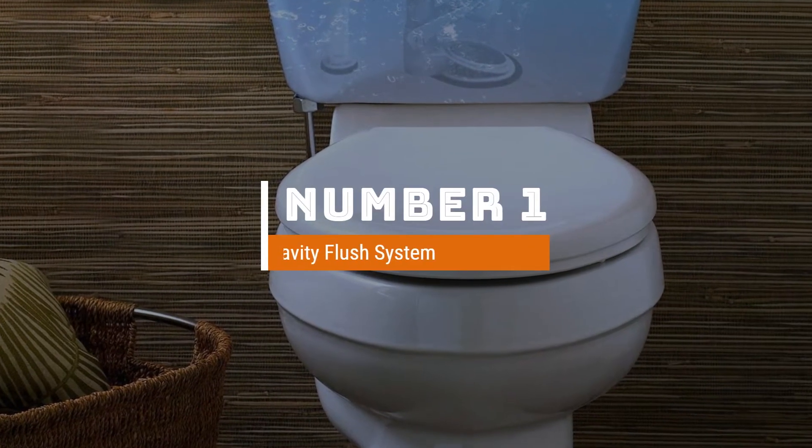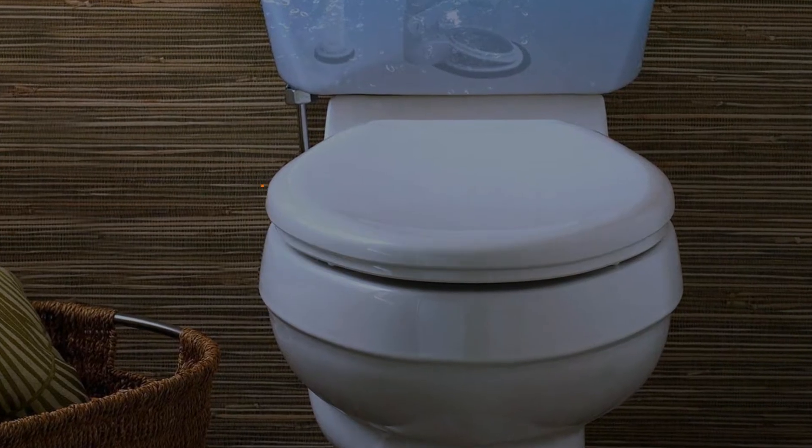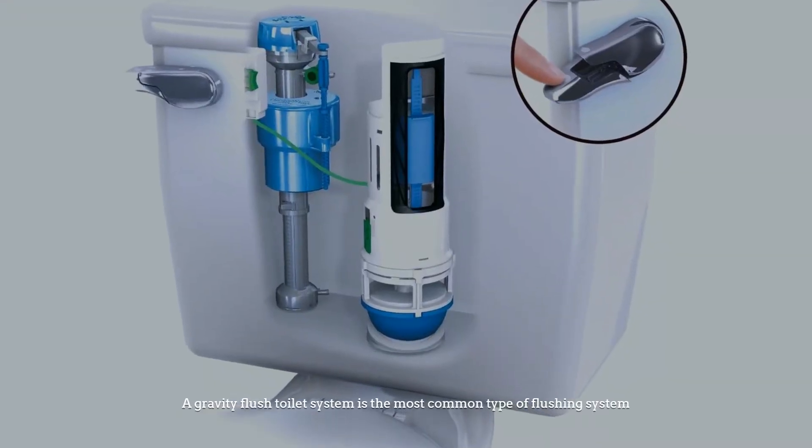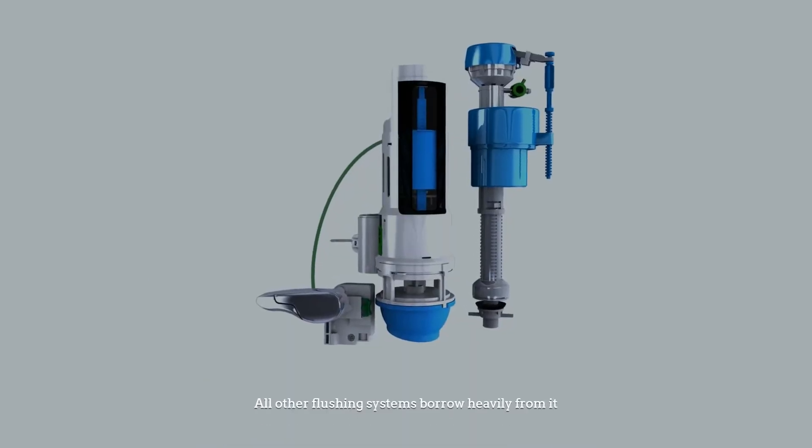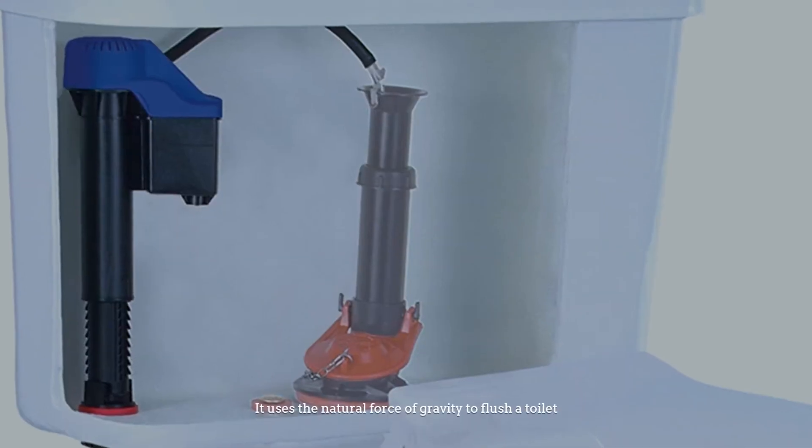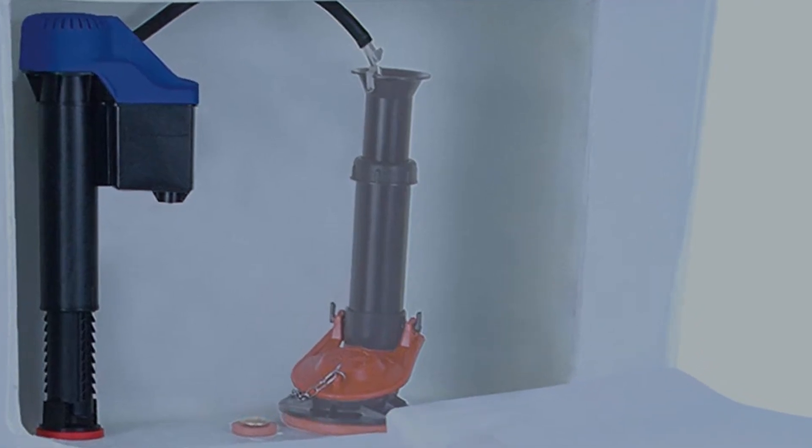Number 1: Gravity Flush System. A gravity flush toilet system is the most common type of flushing system. All other flushing systems borrow heavily from it. It uses the natural force of gravity to flush a toilet.